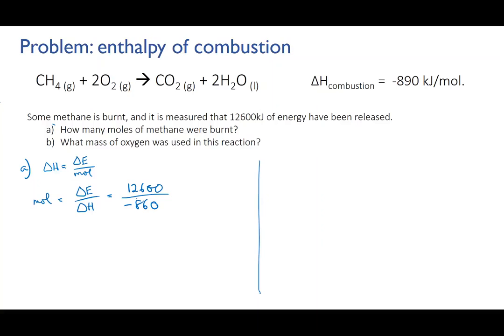Well, the 12,600 value for the change in energy was specified in the question as released. That means it's exothermic, the energy is coming out of the system. So we need to put a negative sign in front of the 12,600. Now we have a negative divided by another negative, and we find that the answer is 14.16 moles of methane.